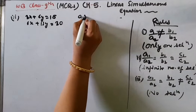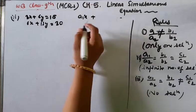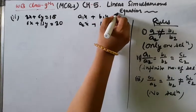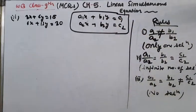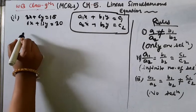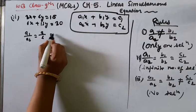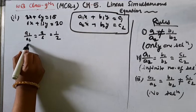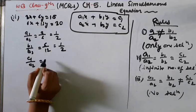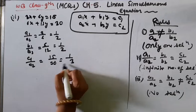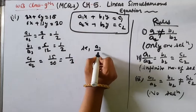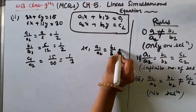For question 2, we do the comparison directly. A1 by A2 equals 3 by 6, which equals 1 by 2. B1 by B2 equals 6 by 12, which also equals 1 by 2. And C1 by C2 equals 15 by 13. So A1/A2 equals B1/B2, meaning all the ratios are equal: A1/A2 equals B1/B2 equals C1/C2.